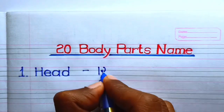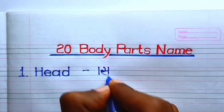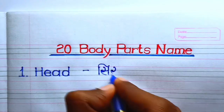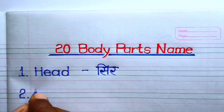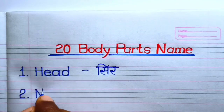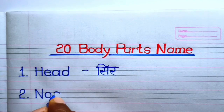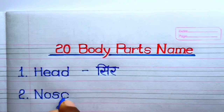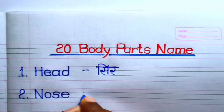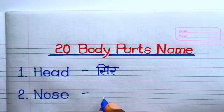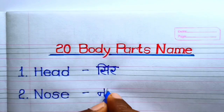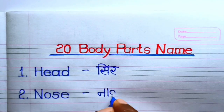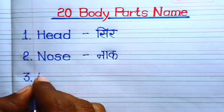Number 1. Head — Head means seer. Number 2. Nose — Nose means knuck.